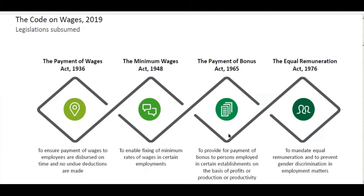The Code on Wages is a collaboration or amalgamation of four existing labor laws: the Payment of Wages Act 1936, the Minimum Wages Act 1948, the Payment of Bonus Act 1965, and the Equal Remuneration Act 1976.